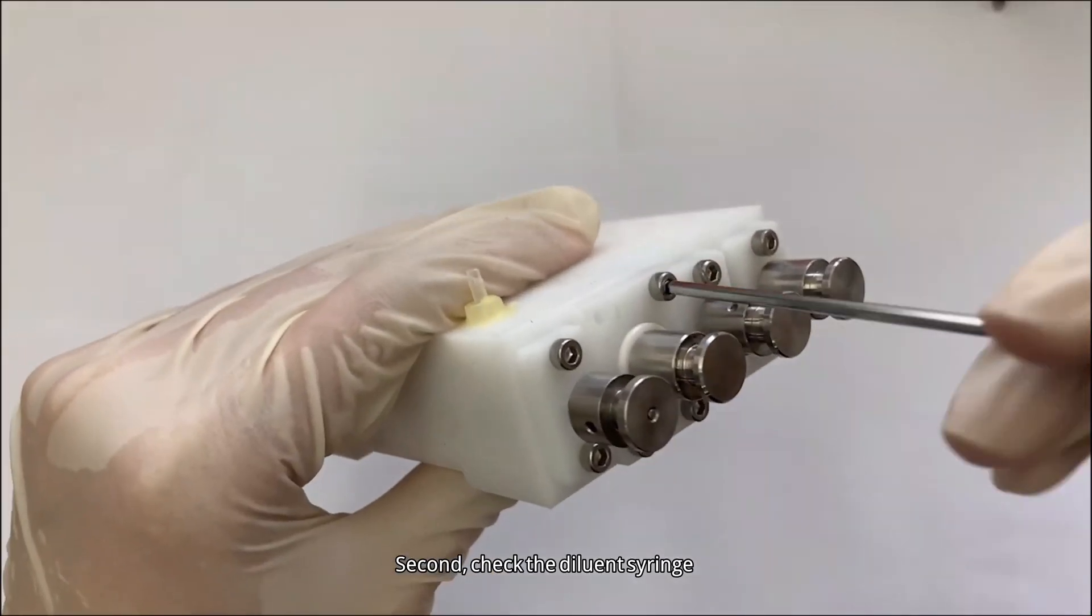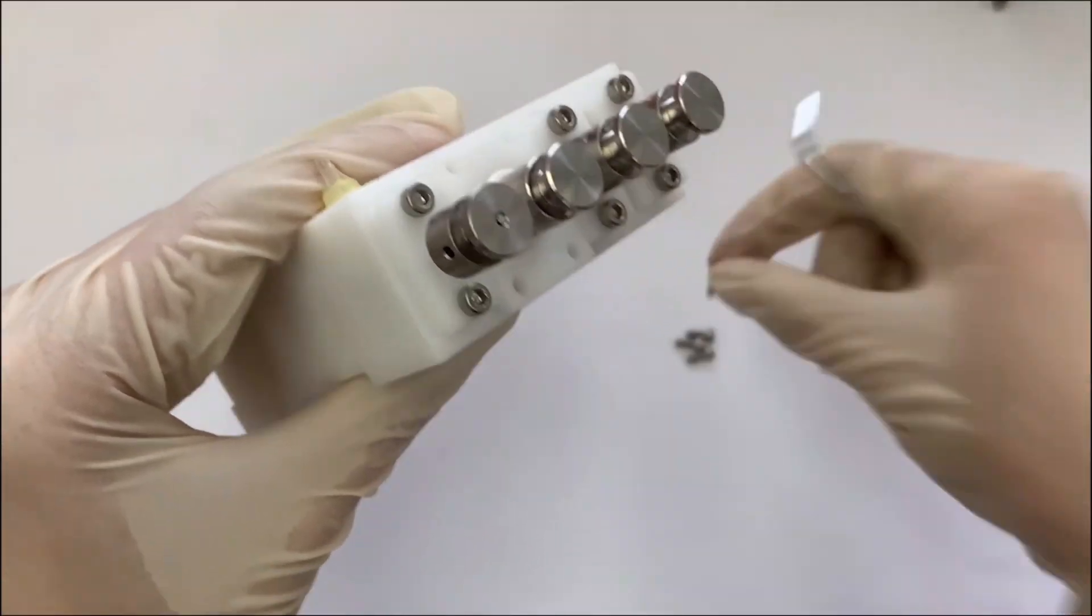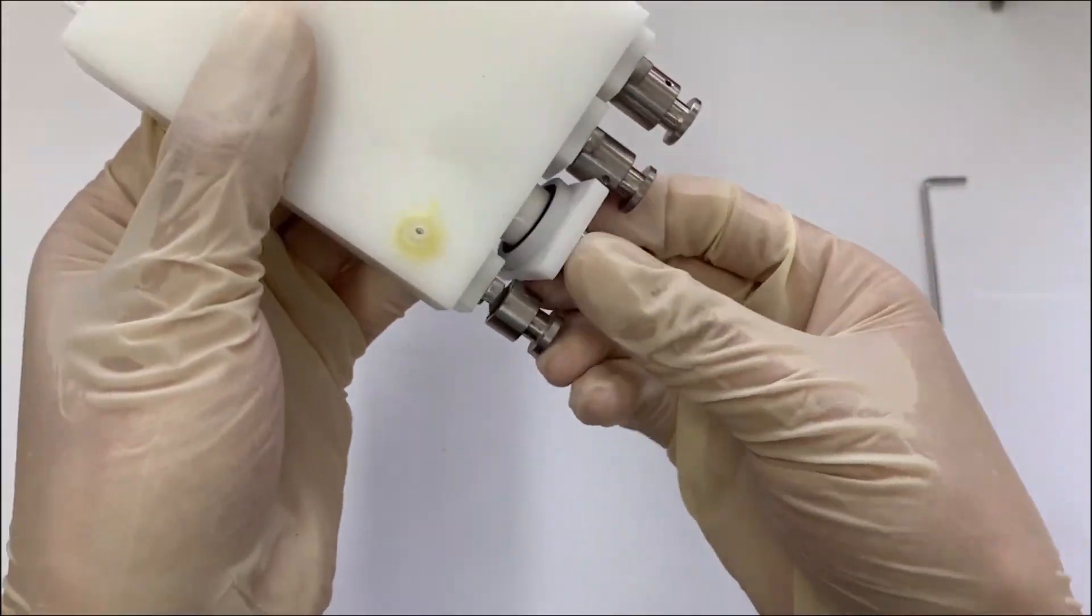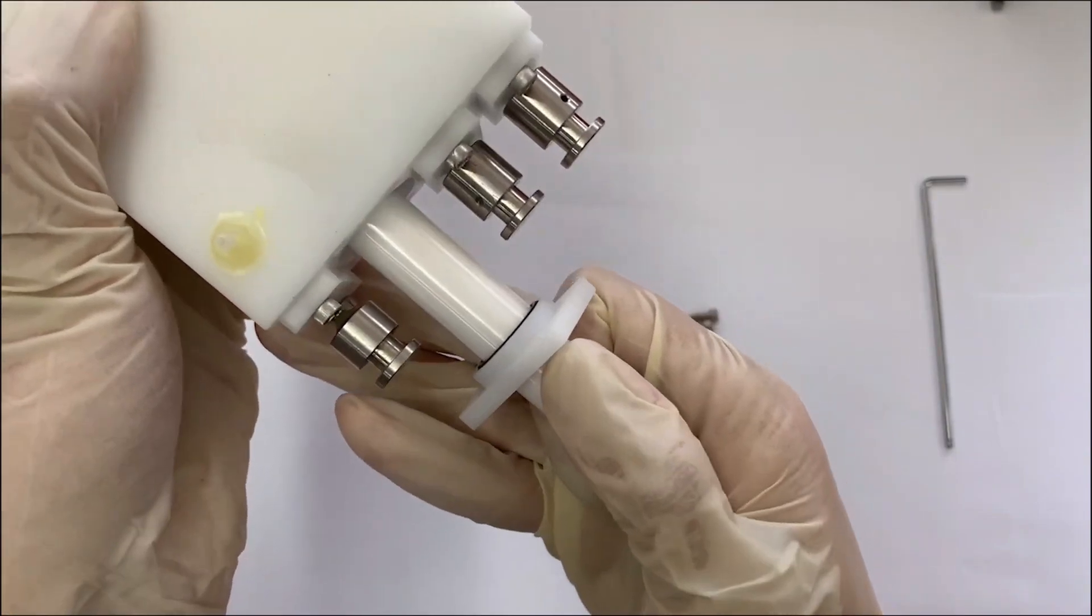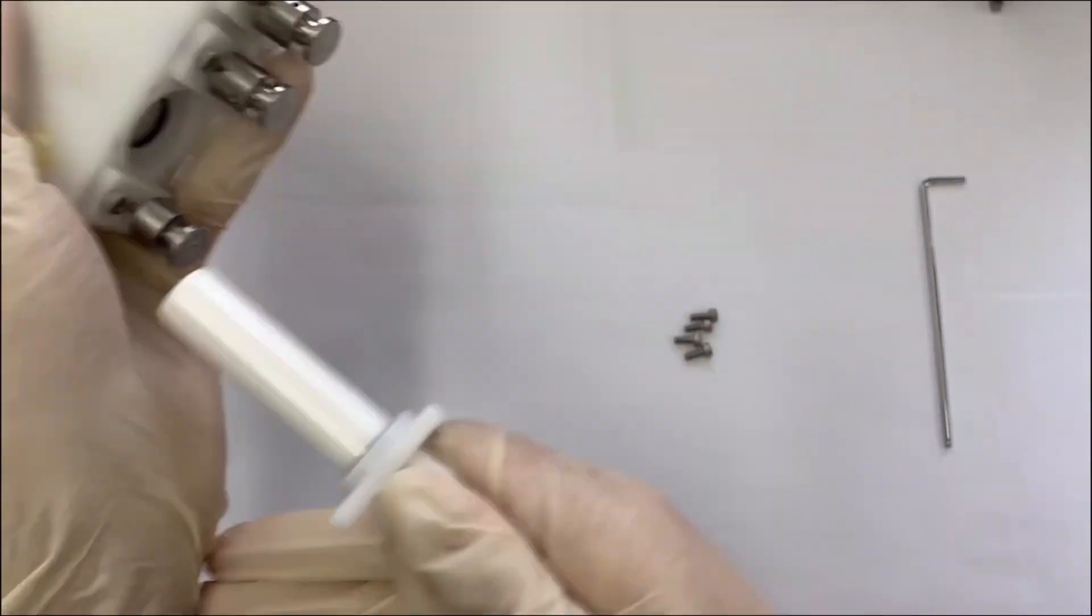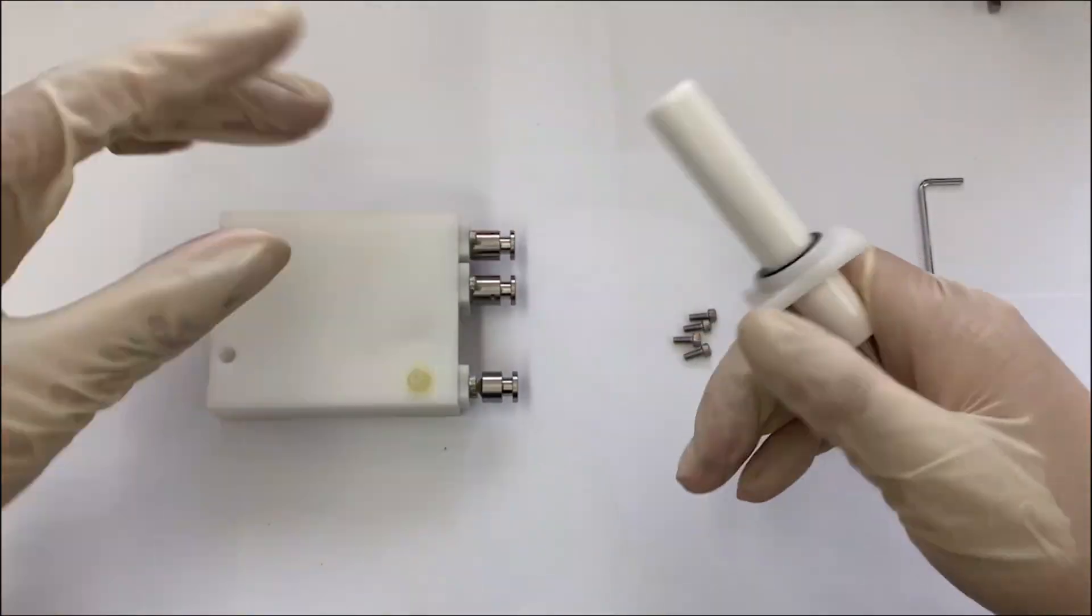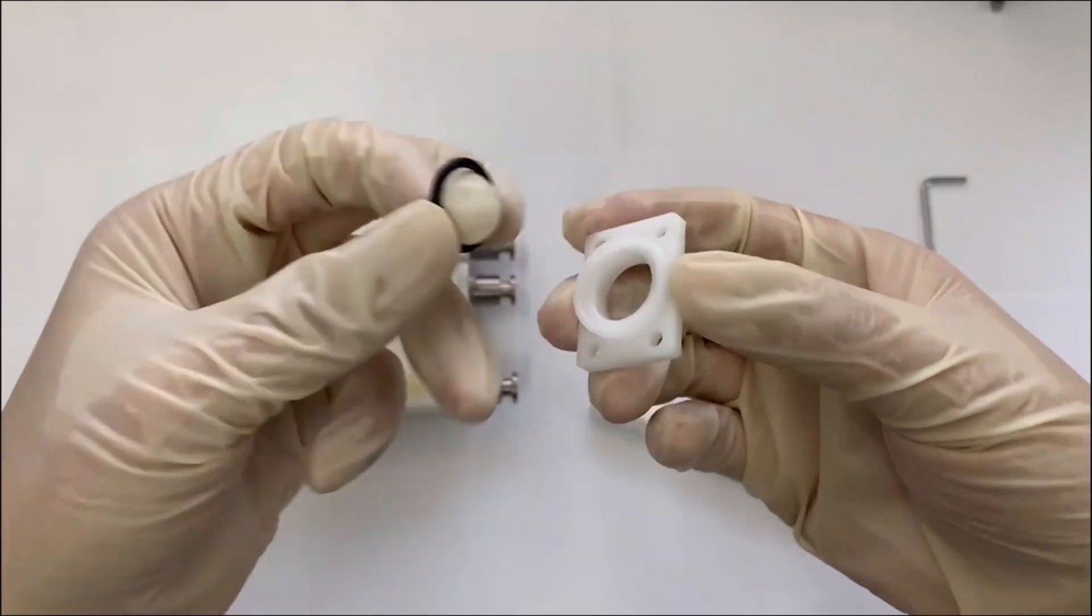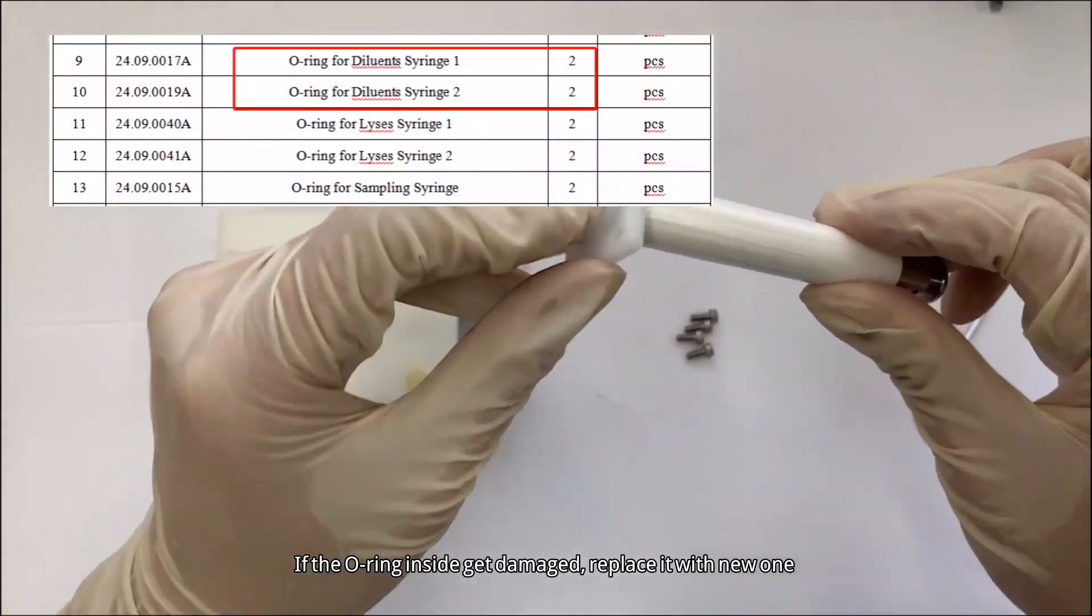Second, check the diluent syringe. If the O-ring inside gets damaged, replace it with a new one.